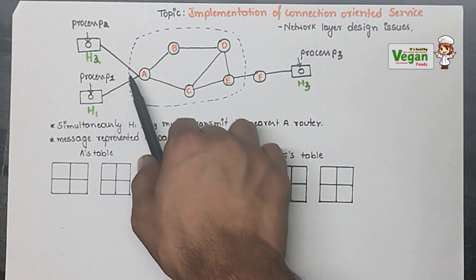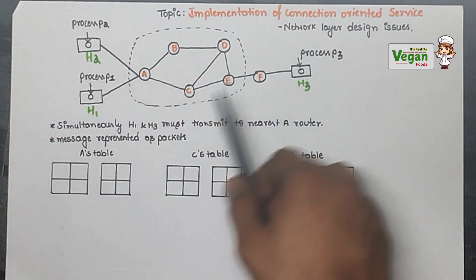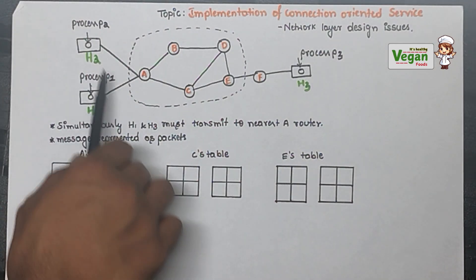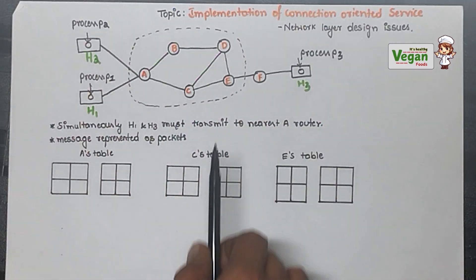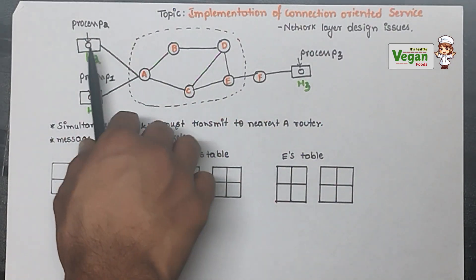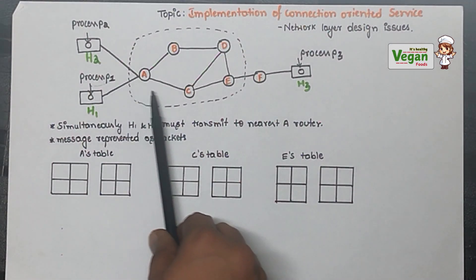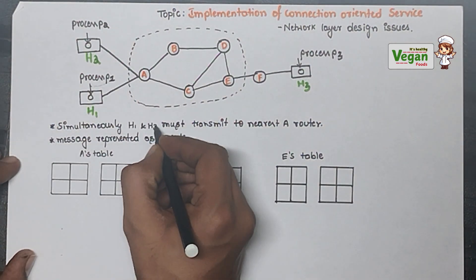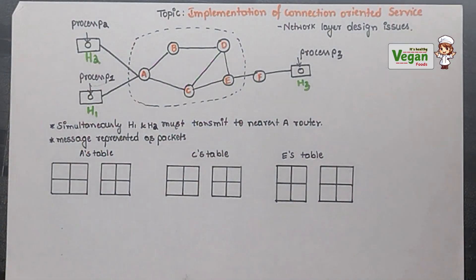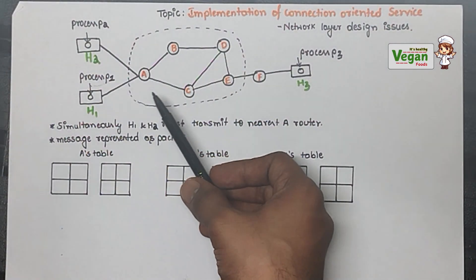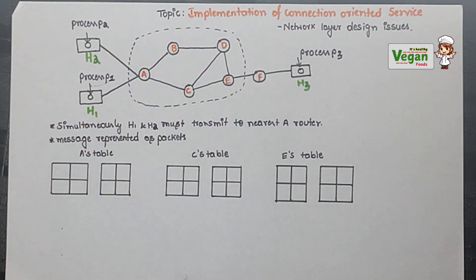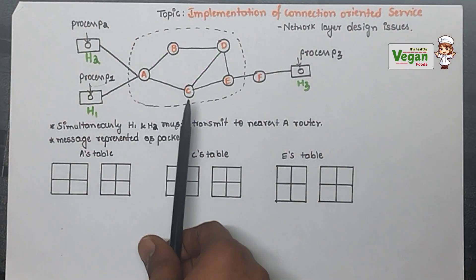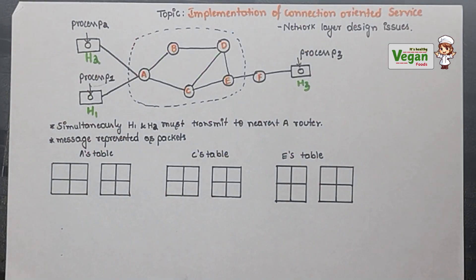Because of the connection-oriented service, whatever values the sender sends will go simultaneously. H1 and H2 must transmit to the nearest Router A. The message is represented as packets. Router A will then send the packets to the next router — let's consider it will send to Router C.